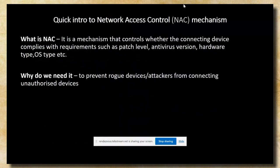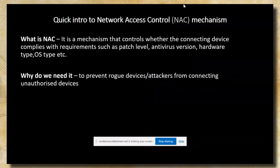What is a network access control? Network access control is simply a mechanism that controls whether the connecting device complies with a set of security requirements. These requirements can be anything from patch level, antivirus version, specific hardware type, operating system type, and so on. We need this to prevent rogue devices and attackers from connecting unauthorized devices.